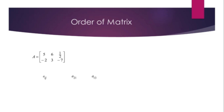Order of Matrix — Example 1: Let matrix A equal [5, 6, 1/2 / -2, 3, -7]. What is the order of matrix A? There are 2 rows and 3 columns, so the order of matrix A is 2 by 3.